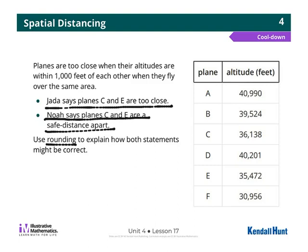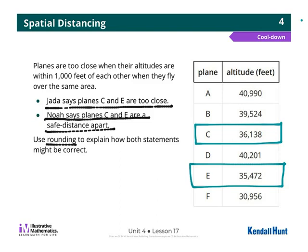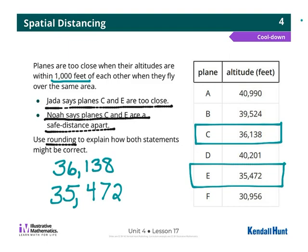To start, I'm going to take a look at what Jada said. She said planes C and E are too close. Well, if they're too close, they have to be less than a thousand feet of each other. Plane C is flying at 36,138 feet. Plane E is flying at 35,472 feet. So I'm going to use some rounding to show that they're less than a thousand feet apart.